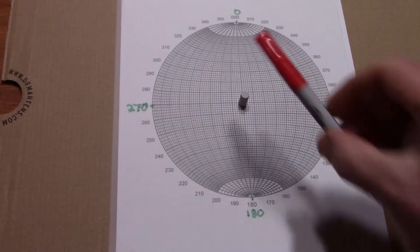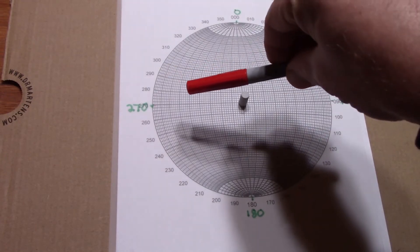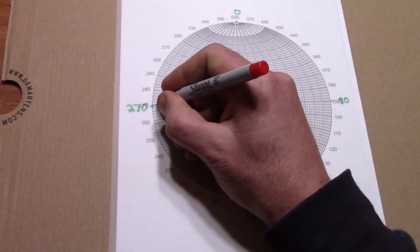So how do we plot a lineation with trend and plunge of 270-15? Visualize the problem, and where we should probably end up. Start with the trend of 270, which, as with our planar strike, we mark on the transparency at the 270 degree point on the outer circle.